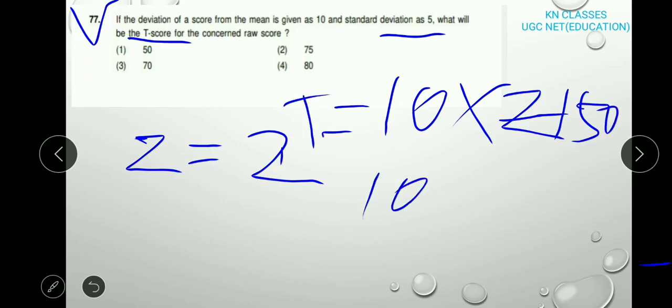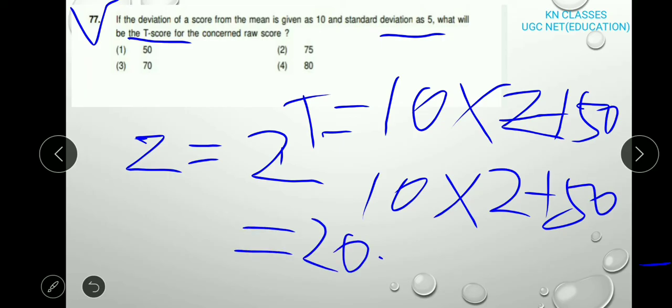So 10 into Z, which we got as 2, 10 into 2 plus 50. So here, the right answer is option 3, 70.